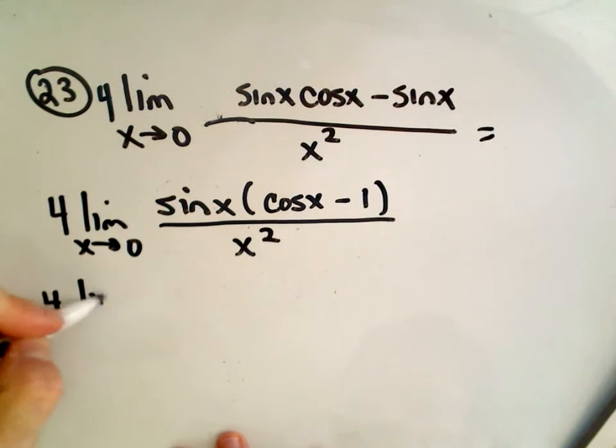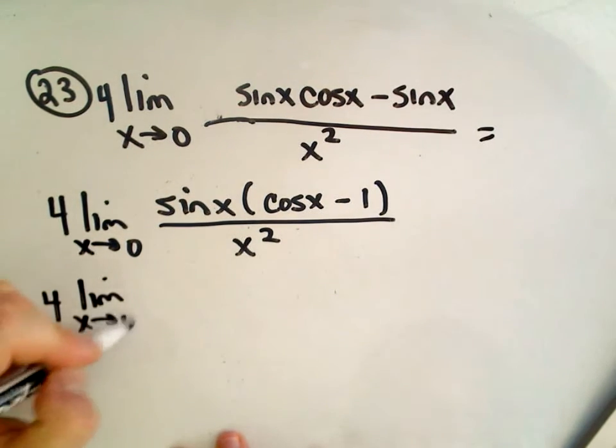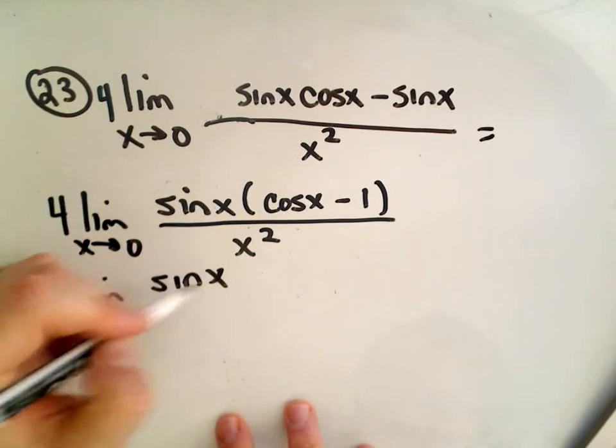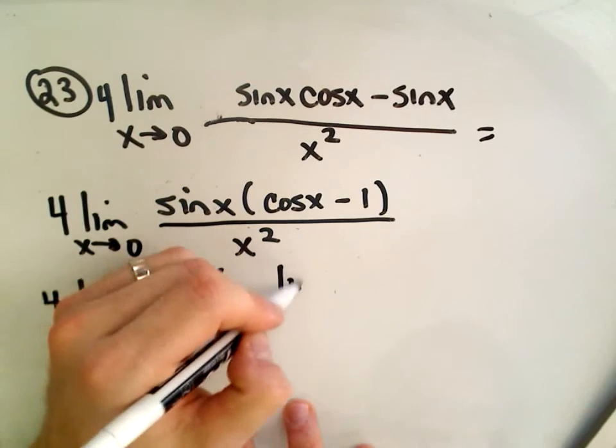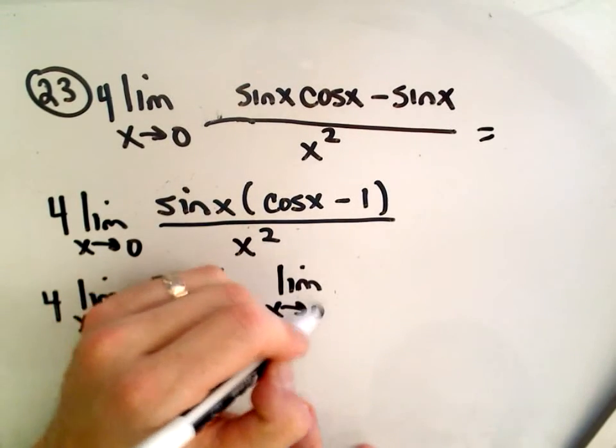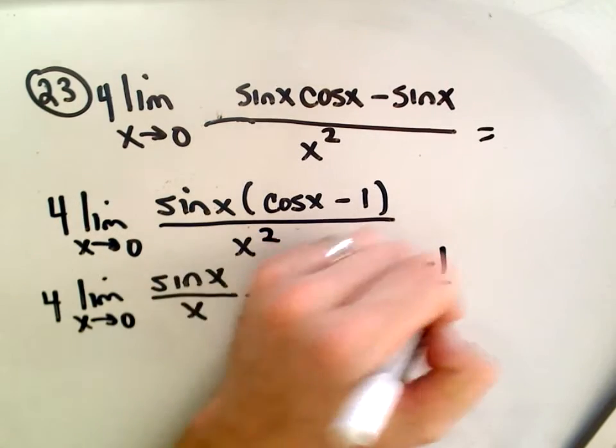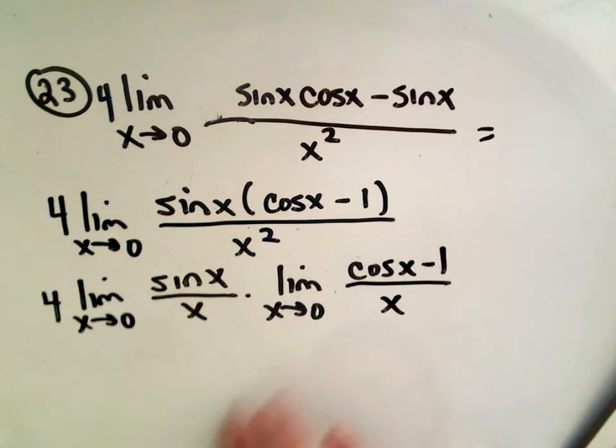And with limits, you can look at them, you can basically do them a piece at a time. You can break them up as a product. So I'm going to break this up as sine x over x times the limit as x approaches 0 of cosine x minus 1 over x.